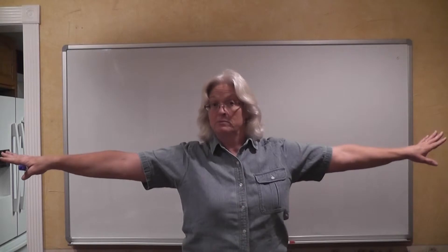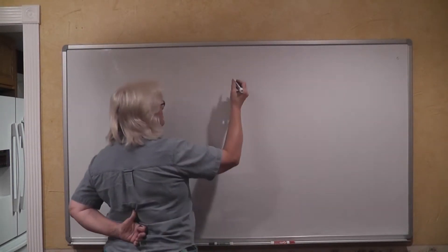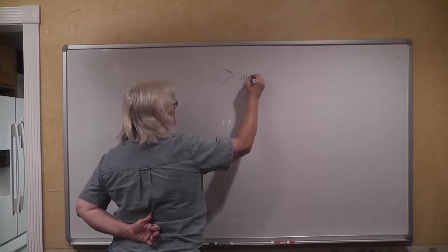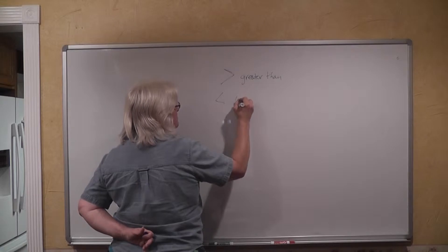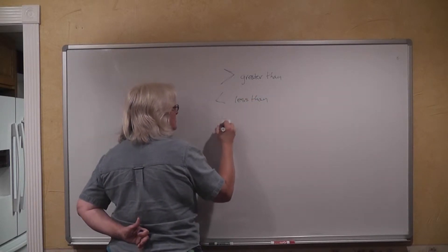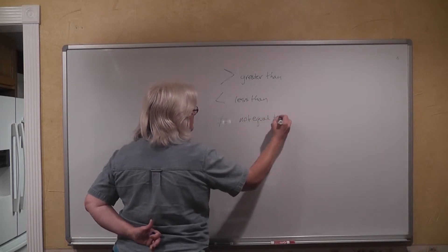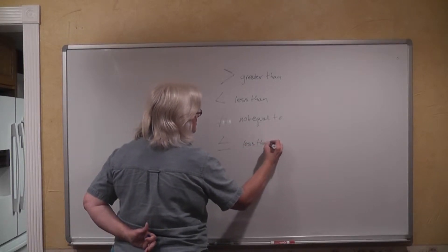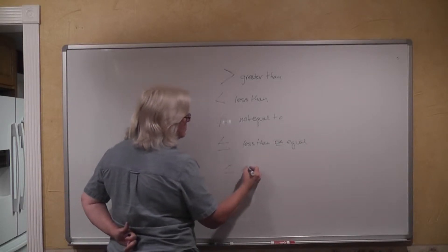So, this is equals. This is not equals. There are five symbols that we are going to be talking about today. We have greater than. We have less than. We have not equal to. We have less than or equal to. And we have greater than or equal to.